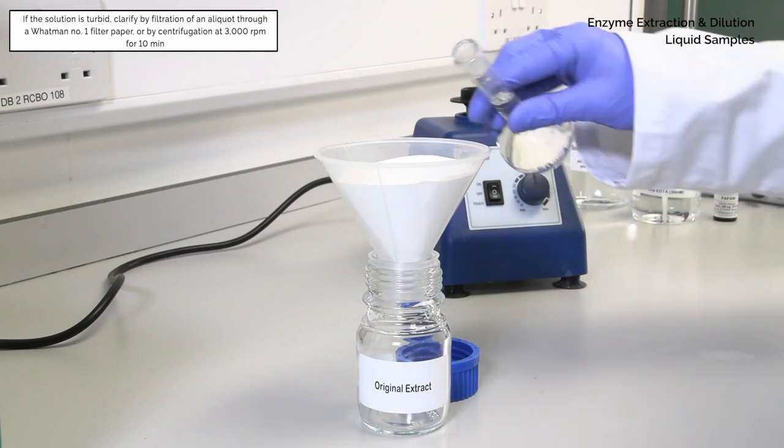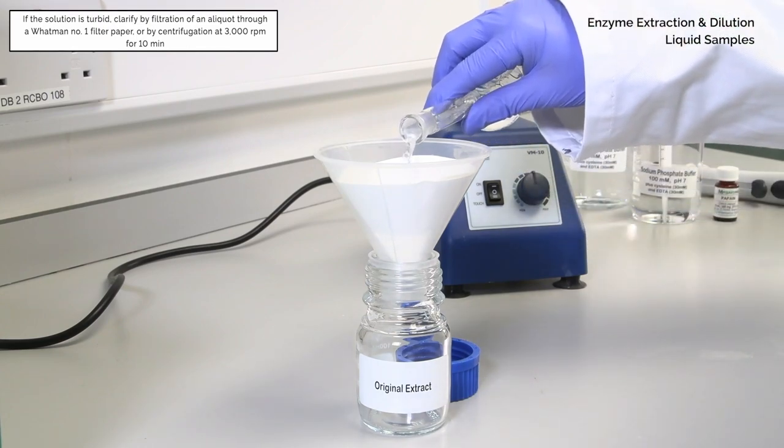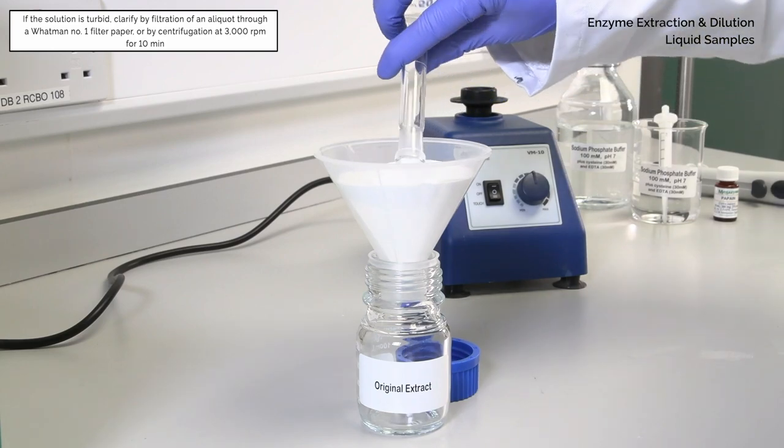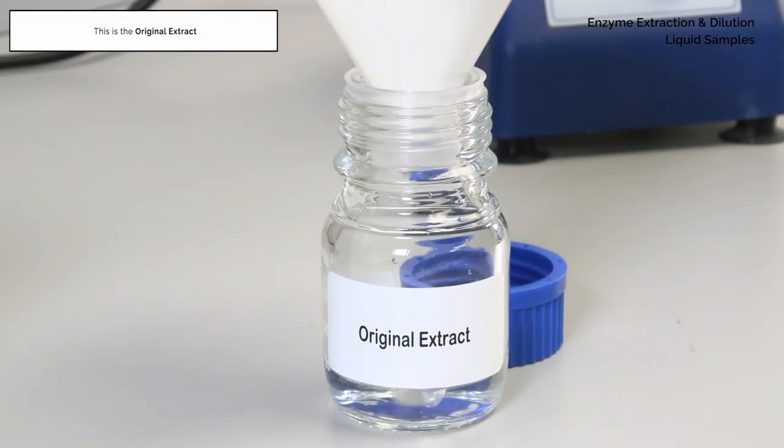If the solution is turbid, clarify by filtering an aliquot through Whatman No. 1 filter paper or by centrifugation at 3000 rpm for 10 minutes. This is the original extract.